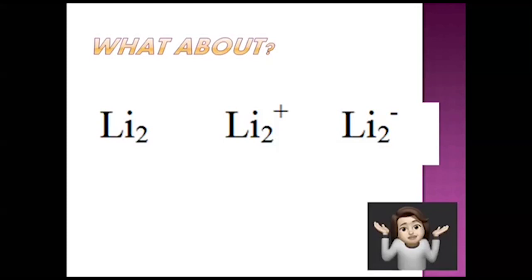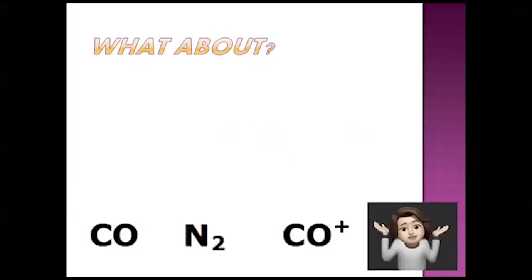If we look at CO and N2, both have 14 total electrons, so both have bond order 3. But when we consider CO⁺, its bond order is 3.5, whereas N2⁺ has bond order 2.5. This is because CO⁺ is a heteroatomic species while N2⁺ is homoatomic. Also, in N2⁺ both nitrogen atoms show sp mixing, while in CO⁺ only the carbon atom shows sp mixing — causing differences in their molecular orbital diagrams. We can simply memorize: CO⁺ bond order = 3.5, N2⁺ bond order = 2.5.